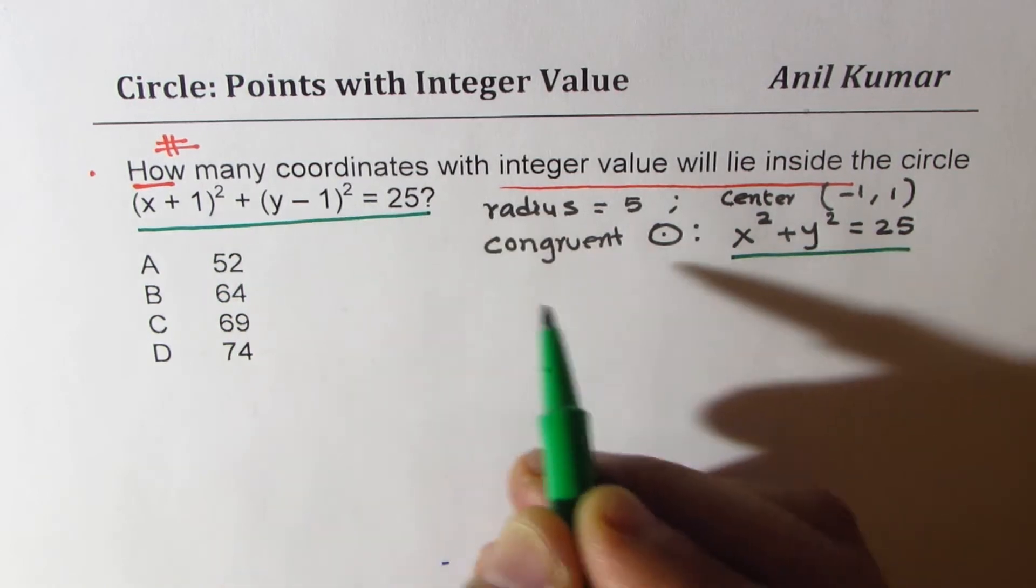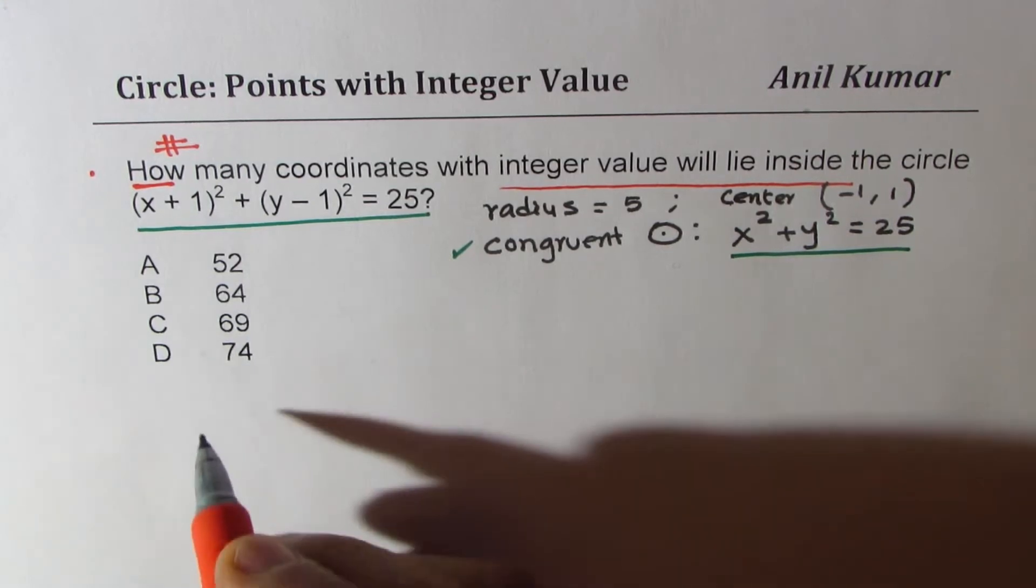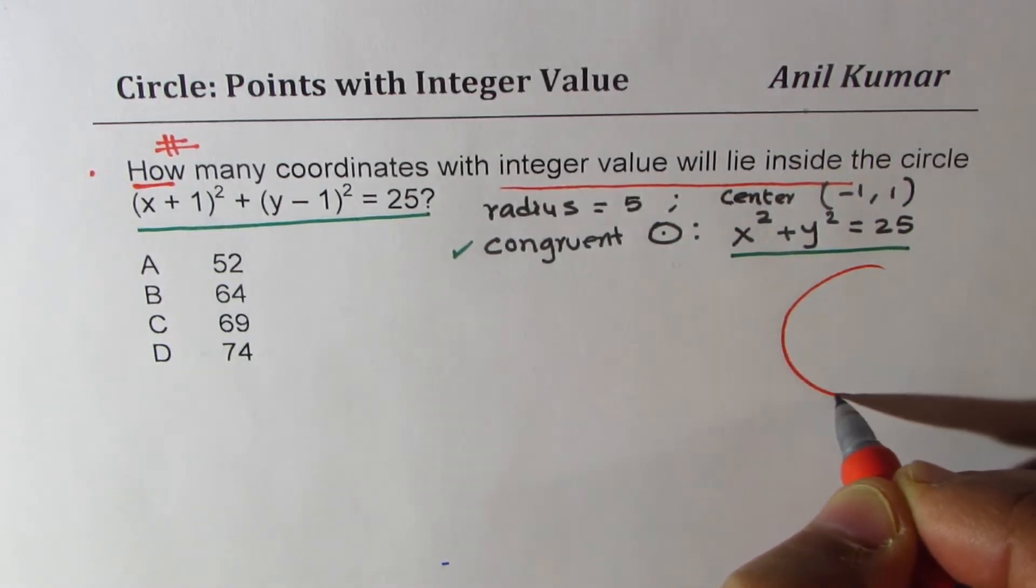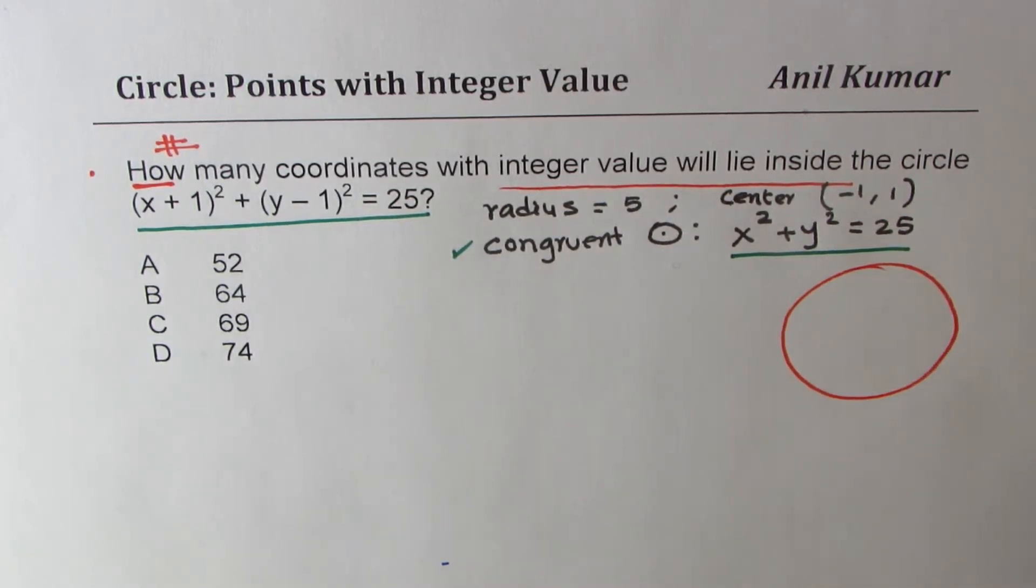These two circles, since they are congruent, they will have same number of points. So we will work with the congruent circle. So let's make one and try to figure it out. So let me make a circle here. Assume that this is our circle with radius 5.